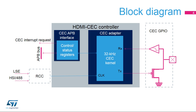It consists of a CEC adapter and a CEC Advanced Peripheral Bus, or APB, interface. The CEC adapter provides functions such as frame decoding and checking, while the CEC APB interface manages the control and status registers, data in-registers and data out-registers, and synchronous interrupt requests.